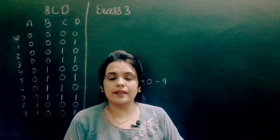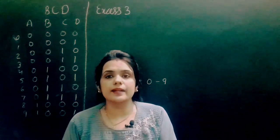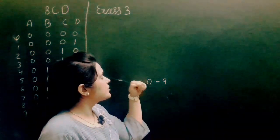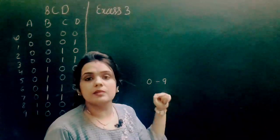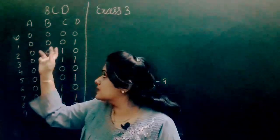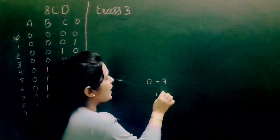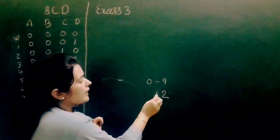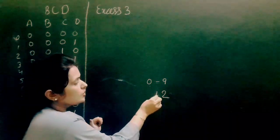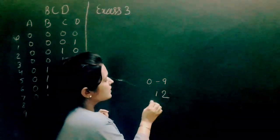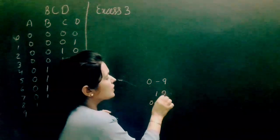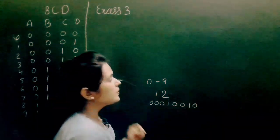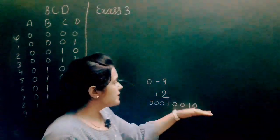So what about numbers greater than 9, that is 2-digit or 3-digit numbers? How can we represent them in BCD? Only decimal digits from 0 to 9 can be represented in 4-bit BCD equivalent. For example, to represent 12 in BCD, I will write the BCD equivalent of 1, which is 0001, and the BCD equivalent of 2, which is 0010. So numbers greater than 9 can be represented like this.